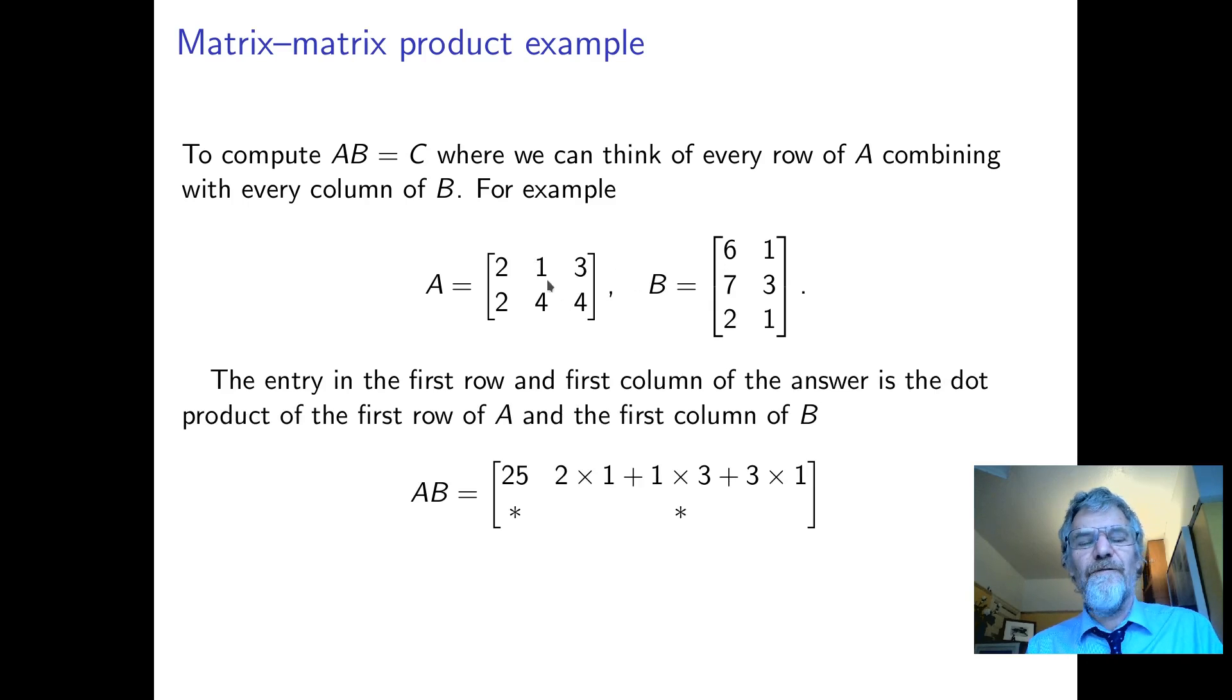And then for the next entry, we get the first row and the second column. We're going to write that answer in the first row and second column. Two times one plus one times three plus three times one.